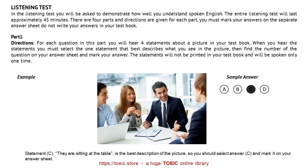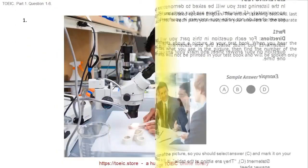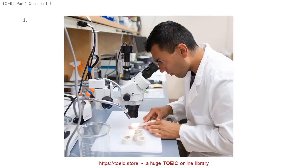Now Part 1 will begin. Number 1. Look at the picture marked number 1 in your test book. A. He is adjusting a microscope. B. He is looking into an instrument. C. He is putting on a lab coat. D. He is turning away from the desk.